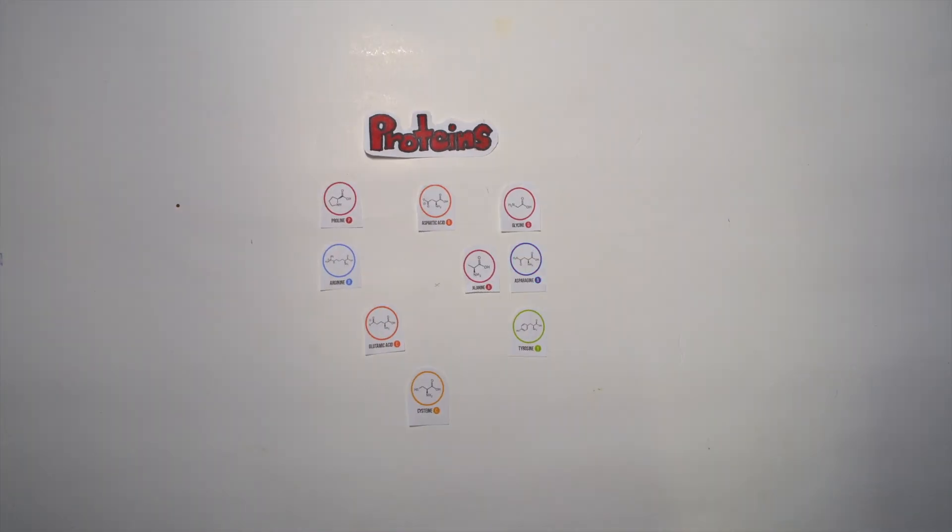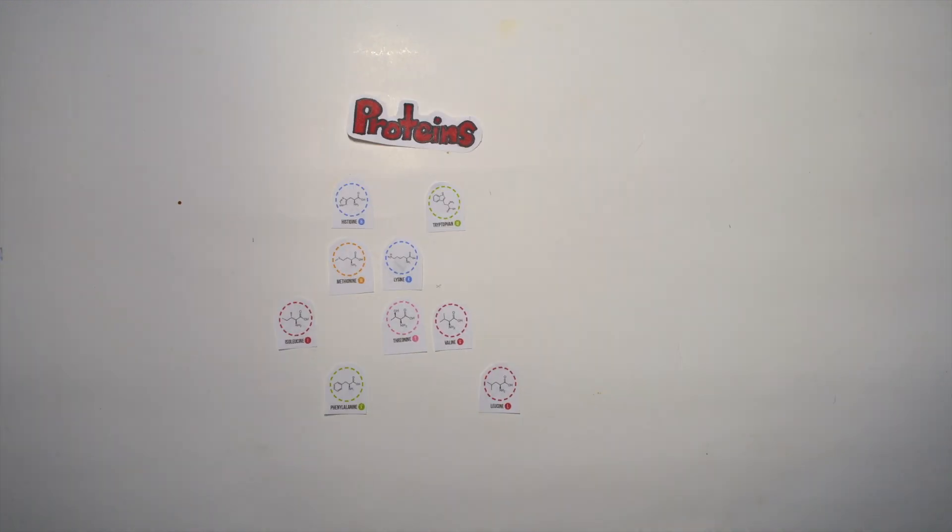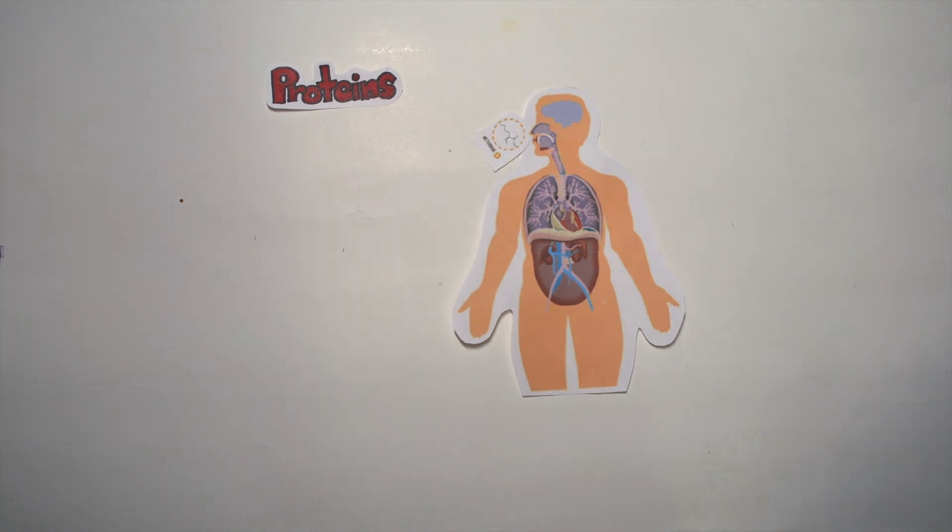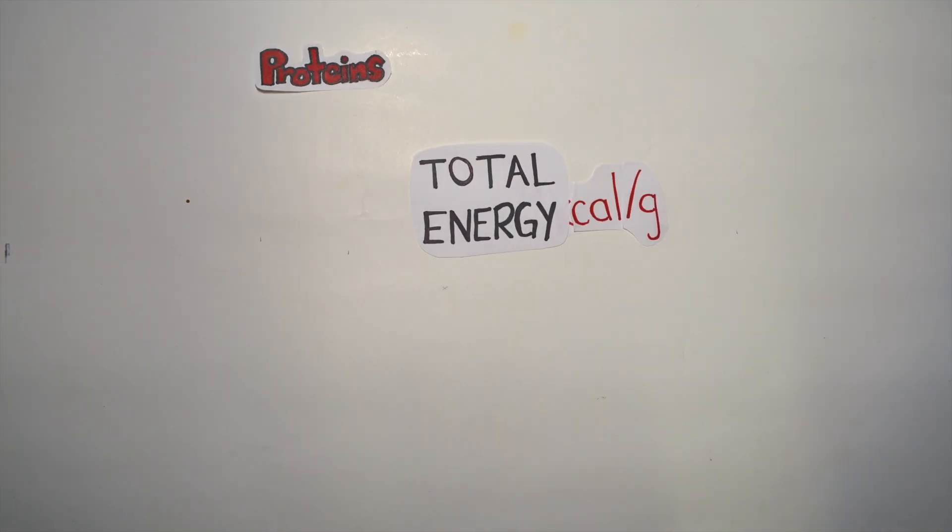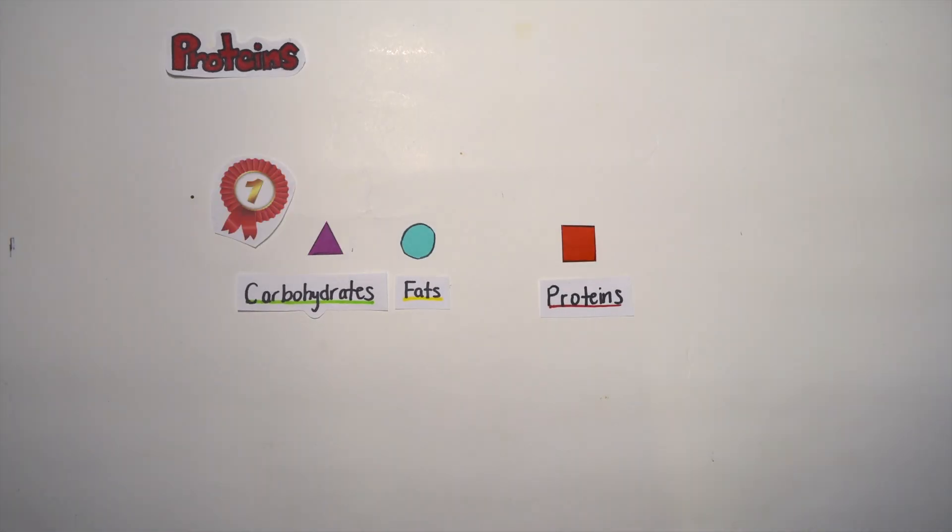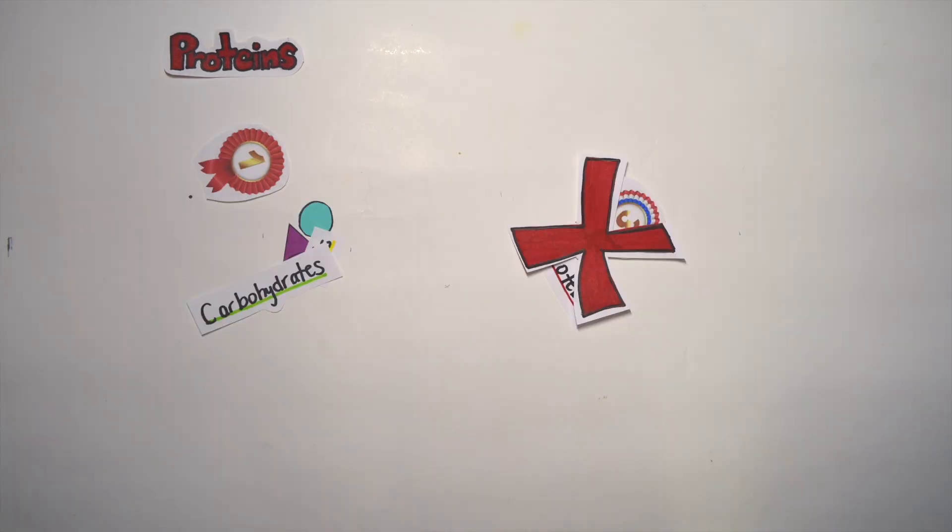Now proteins are built from 20 different molecules called amino acids. 9 of these 20 essential amino acids are not produced in the body and therefore need to be consumed daily. These also produce around 4 kcal per gram. Proteins are the body's last resort for energy as cells catabolize lipids and carbohydrates first to avoid protein breakdown.